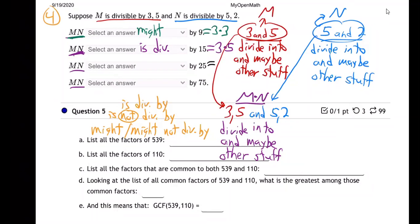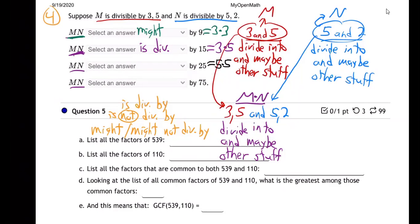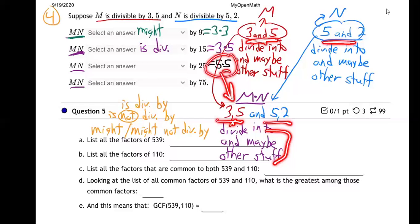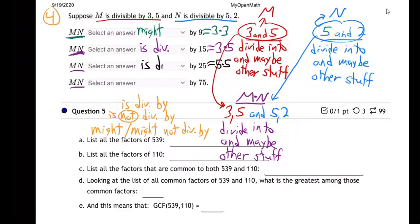Let's try the next one: 25. What's in a 25? Five times five. So the question is, will five times five divide into M times N? We have a three and a five and a five and a two. My friend M and my friend N getting together bring a three, a five, a five, and a two. So do they have two fives? They do for sure. So that's another yes — is divisible. They have the two fives for sure.